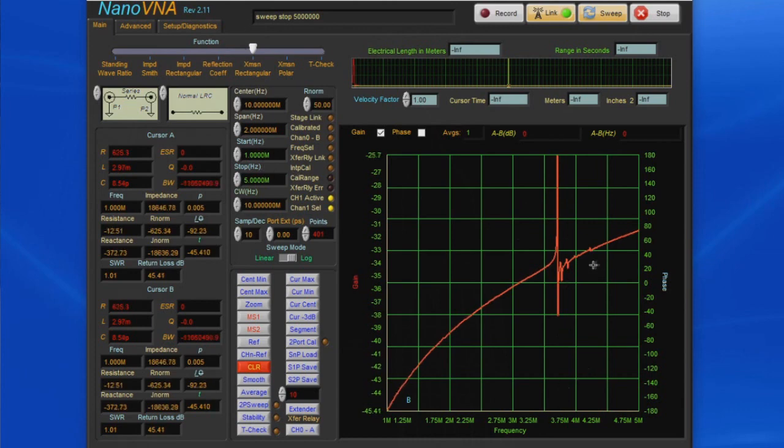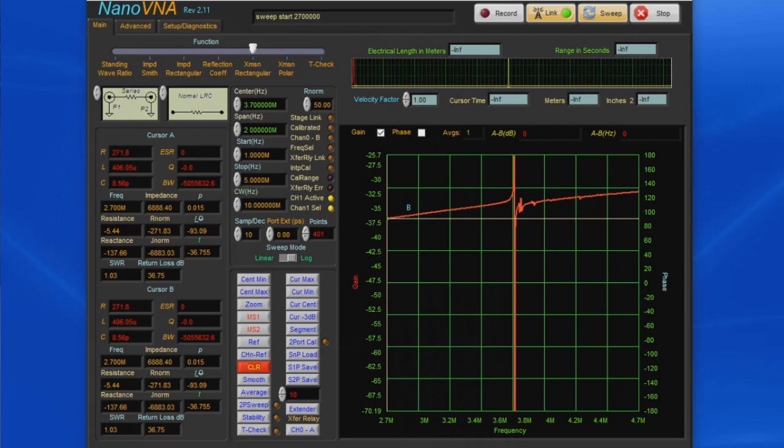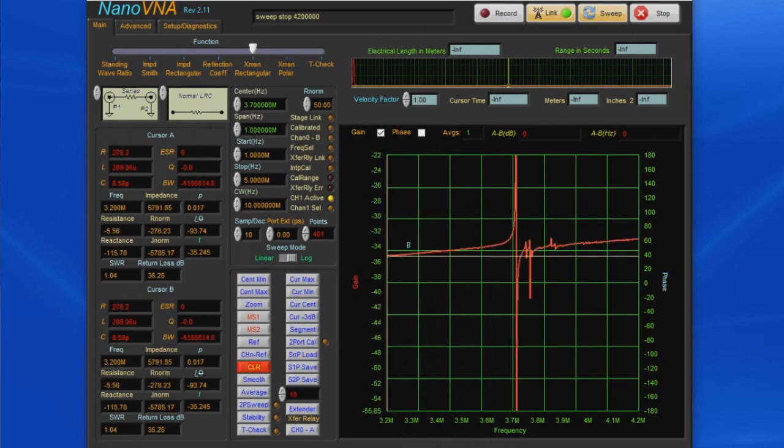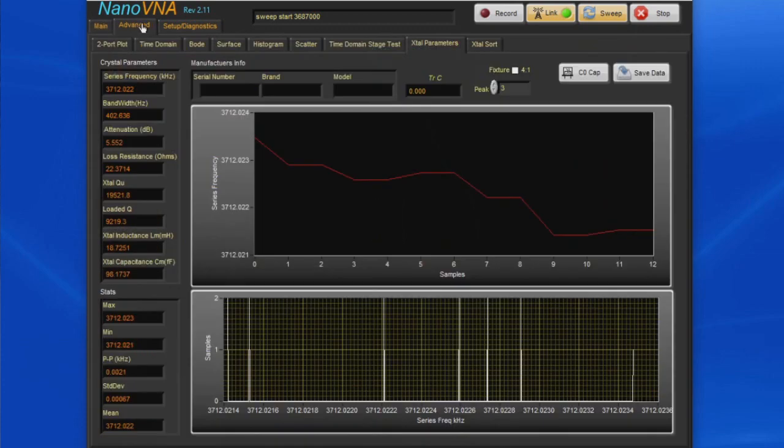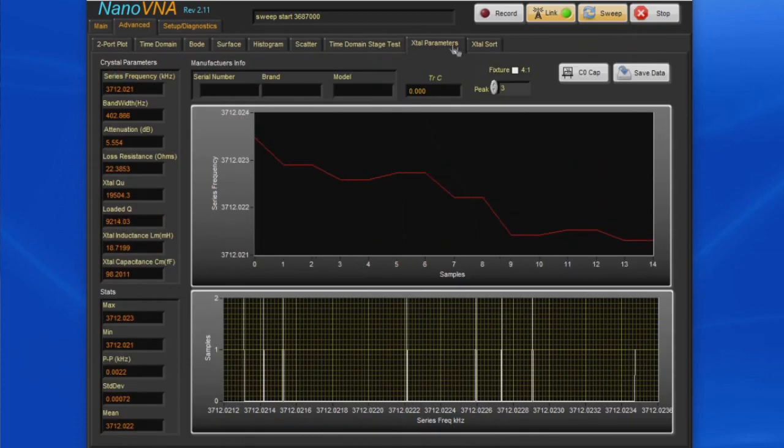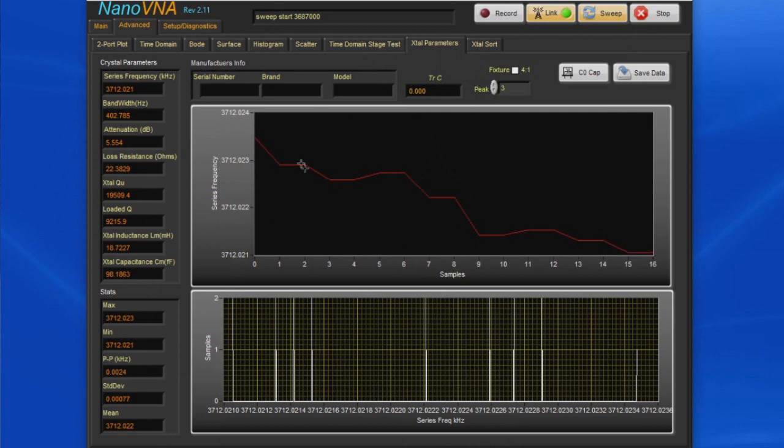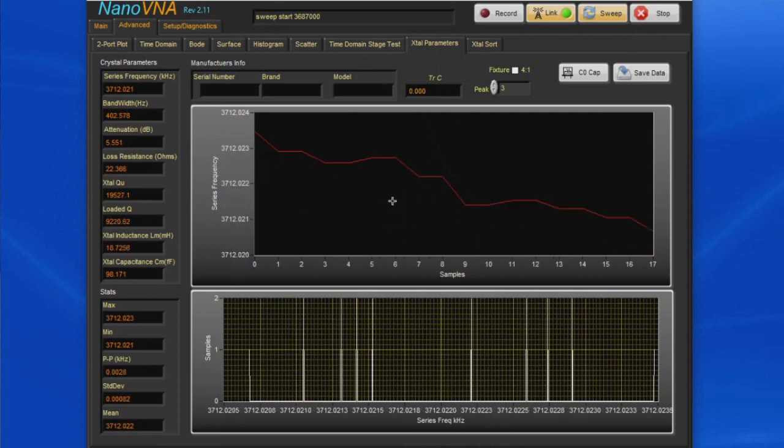Because we're looking at the transmission or S21, we'll select transmission rectangular. Right here we can see the resonant point of the crystal, this is right around 3.71 megahertz. We can zoom into this a little bit, select a center frequency at 3.7 and change our span to 100 kilohertz. We can select advanced and it defaults to the crystal parameters.